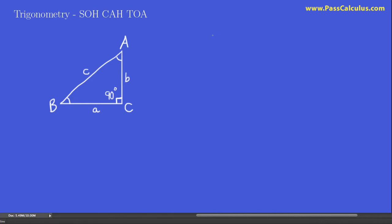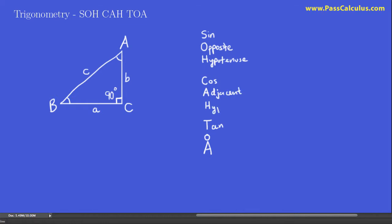Now, SOHCAHTOA — what does that mean? I'm going to write it vertically. S stands for sine, C stands for cosine, T is tangent, O stands for opposite, H is for hypotenuse, and A stands for adjacent. It means: sine is equal to opposite over hypotenuse, cosine is adjacent over hypotenuse, and tangent is opposite over adjacent.